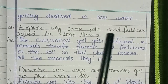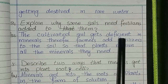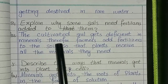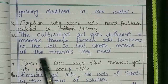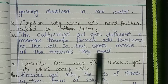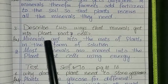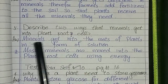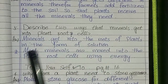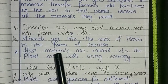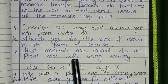Explain why some soils need fertilizer added to them. Cultivated soil becomes deficient in minerals, so farmers add fertilizer so that plants receive all the minerals they need in the form of solution. Describe two ways that minerals get into plant root cells. First, minerals get into the roots in the form of solution. Second, most minerals are moved into the plant root cells using energy.